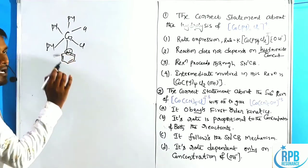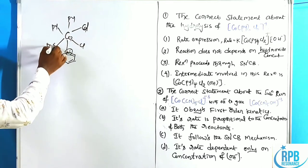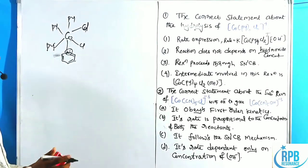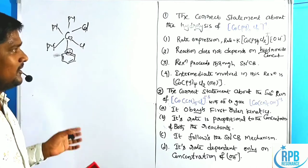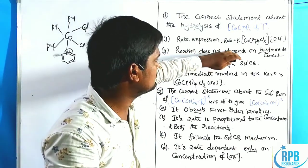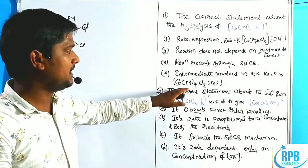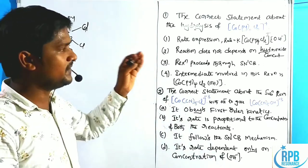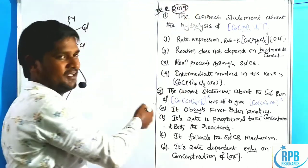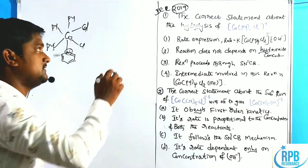In this complex, the NH protons attached to nitrogen are more acidic in nature, and the NH protons trans to the halogen group are particularly more acidic. If NH protons are present, they can participate in the SN1CB mechanism. The four options are: (1) the rate expression uses concentration of both reactants; (2) reaction does not depend upon OH⁻ concentration; (3) reaction proceeds through SN1CB; (4) intermediate is hepta-coordinated. This is a December 2019 CSIR question worth four marks.